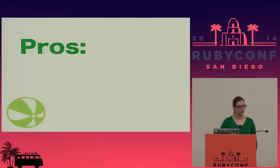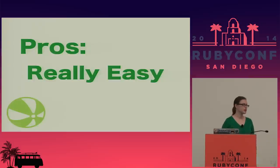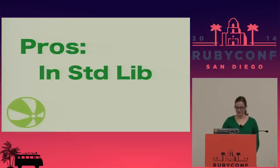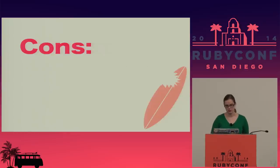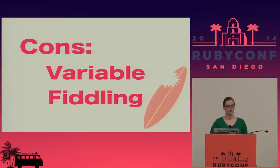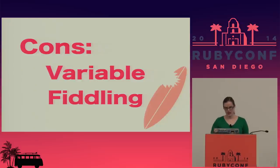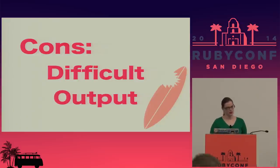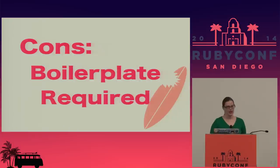What are some pros of the built-in Benchmark library? It's really easy and it's in the standard library. But there are some cons as well. There's a lot of variable fiddling — you have to define how big the object is and how many times you're going to iterate the code block to make it so it's not zero milliseconds or taking forever. I find the output difficult to read with a heavy cognitive load to parse the results, and there's a lot of boilerplate code required to get those benchmarks running.